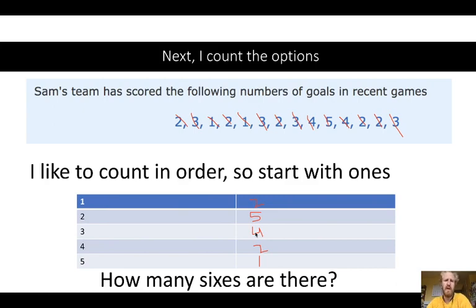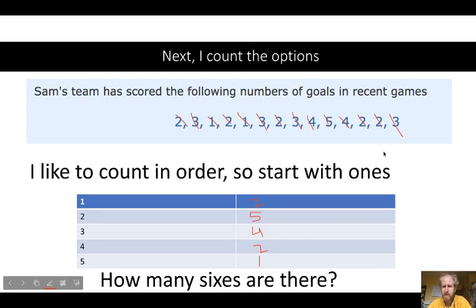This is really important if you ever work a cash register — when you're counting the till at the end of the night, you have to count how many bills and coins you have. Now, are there any 6s in this number set? No. So if I were to include 6, I'd put a 0 right there.